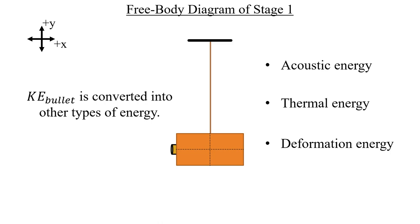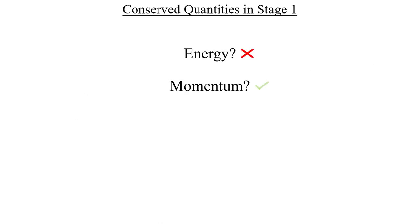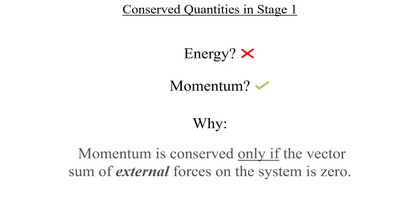What about momentum? Thankfully, yes, that is conserved. And here's why. Whenever the vector sum of external forces is zero, then momentum will be conserved. Notice the emphasis on external. If you have a vector sum of zero in just a single direction, well, that's totally okay too. In that situation, the momentum will be conserved only in that direction.